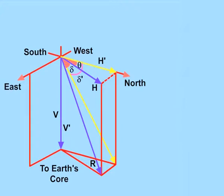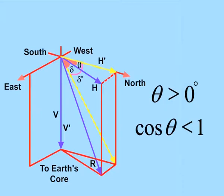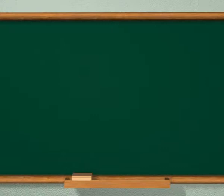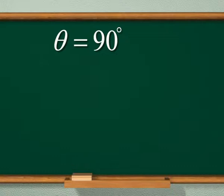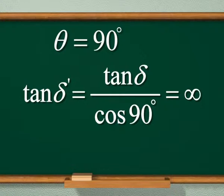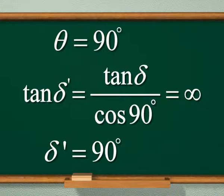It is clear that for any vertical plane other than the magnetic meridian, theta is greater than 0 degrees, that is cos theta is less than 1. This means delta dash is greater than delta. If theta is 90 degrees, that is the plane is normal to the magnetic meridian, then tan delta dash would be infinite. In other words, the apparent angle of dip delta dash would be 90 degrees.